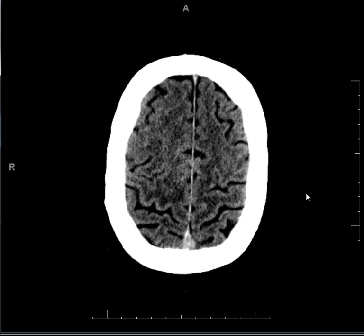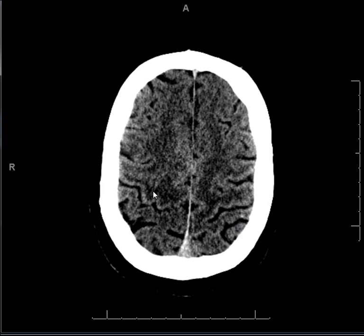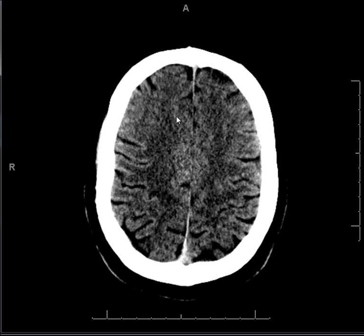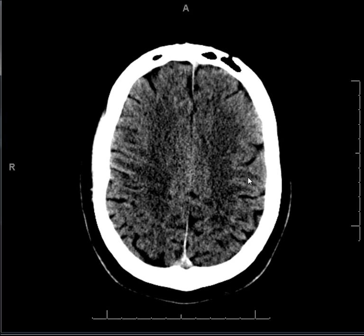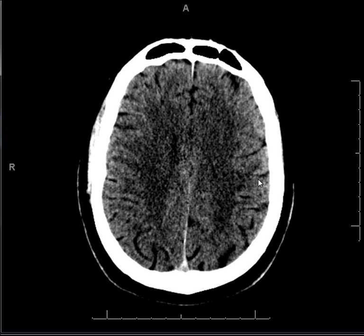The first window is called the parenchymal window, which we need to evaluate the gray and white matter. The gray matter is this gyri-form high signal, and the white matter is the underlying slightly darker density on CT. What you want to make sure is that the gray-white matter differentiation is preserved throughout the brain.